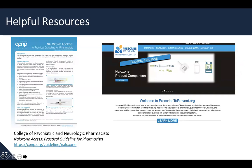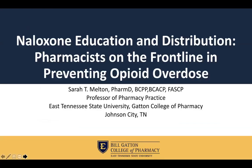Helpful resources include the College of Psychiatric and Neurologic Pharmacists' Naloxone Access Practical Guide for Pharmacists — an easily downloadable PDF for any healthcare professional. The prescribed to prevent.org website is also highly recommended, as the demonstration videos in this presentation came from there and there are many helpful educational materials. Thank you for joining this program: Naloxone Education and Distribution — Pharmacists and Healthcare Providers on the Frontline in Preventing Opioid Overdose. If you have any questions, please email meltonst@etsu.edu.